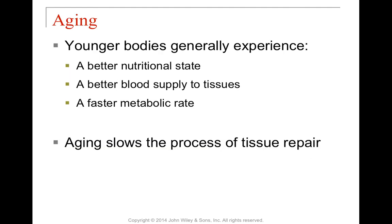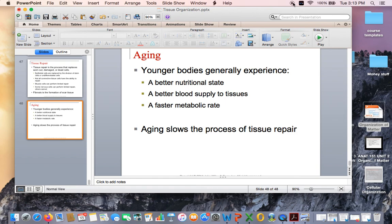Last but not least, let's touch on aging. As we get older, we lose the ability to absorb nutrients properly. We end up with lesser blood supply to our tissues and a decreased metabolic rate. Younger bodies can digest food easily and get nutrition out of it, resulting in an increased metabolism, but as we age we lose this ability. Aging also results in a reduction in the ability of tissue repair. That brings us to the end of this lecture — aloha and happy studying.